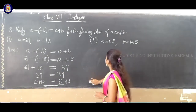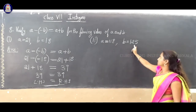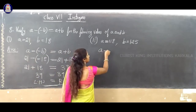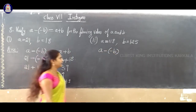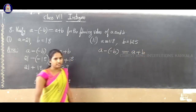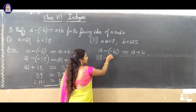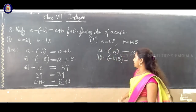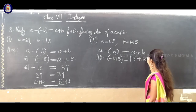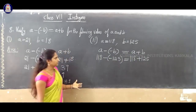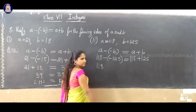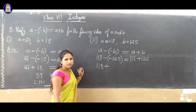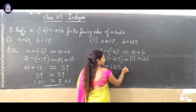Second question: A value is 118 and B value is 125. Substituting: LHS is 118 minus of minus 125, and RHS is 118 plus 125. Multiply the signs — minus into minus gives plus — so LHS becomes 118 plus 125.